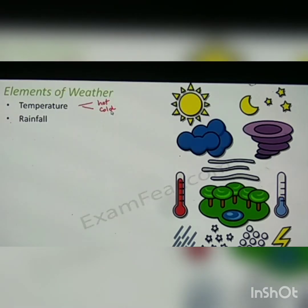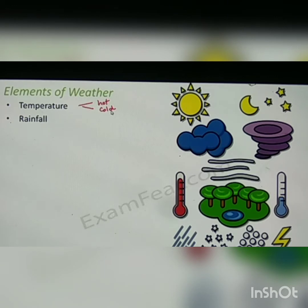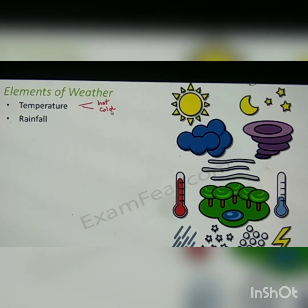Rainfall is another important element of weather. If it rains heavily, it's a rainy day. If it doesn't rain, the weather becomes dry. So the amount of rainfall also determines the weather of a particular day.